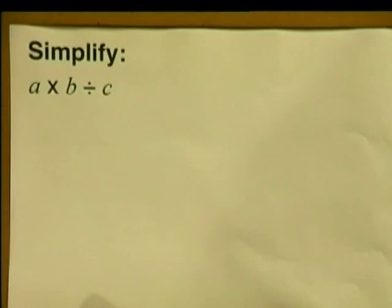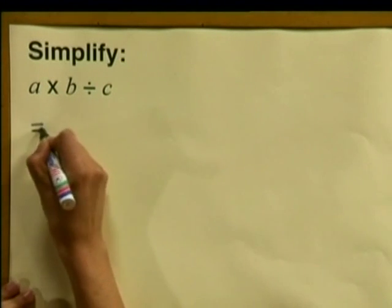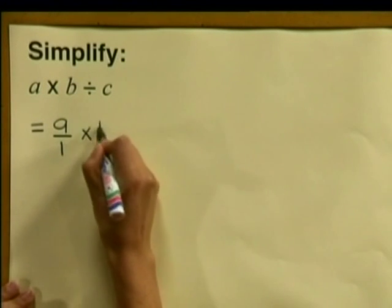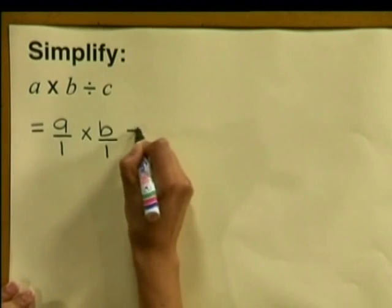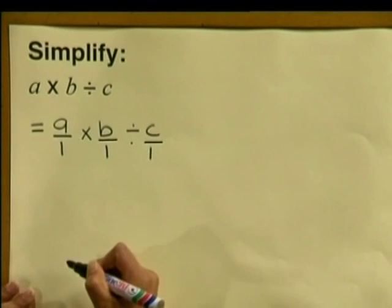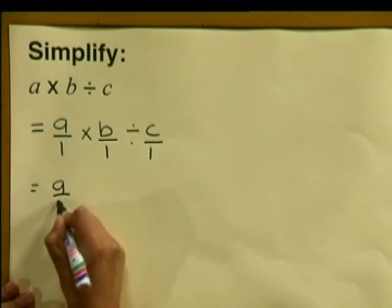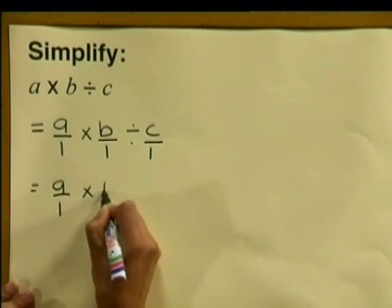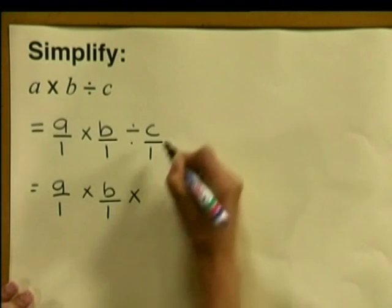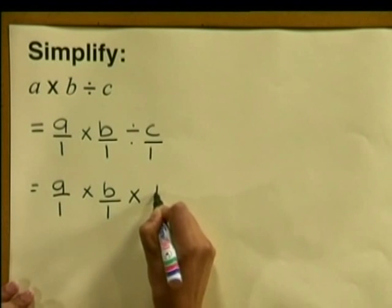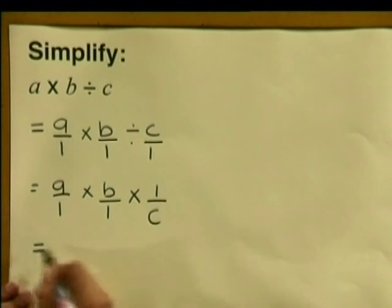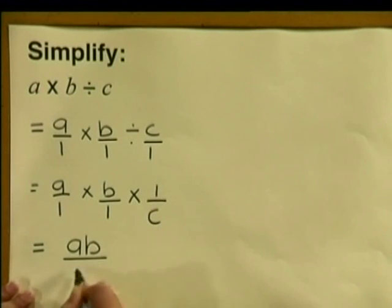These aren't difficult at all. Let's try the next example. Simplify A multiplied by B divided by C. Here there are no brackets so we just work from left to right. We write A divided by 1 multiplied by B divided by C divided by 1. We multiply and flip this around and write 1 divided by C, and when we simplify this we get AB divided by C.